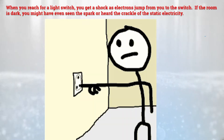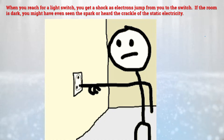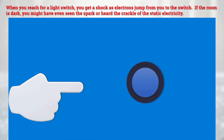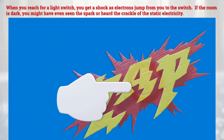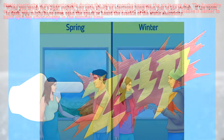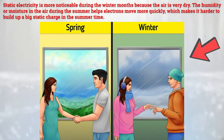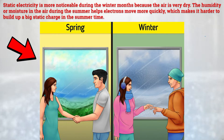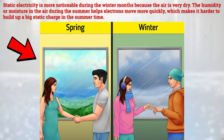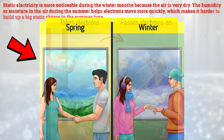When you reach for a light switch, you get a shock as electrons drop from you to the switch. If the room is dark, you might have even seen the spark or heard the crackle of the static electricity. Static electricity is more noticeable during the winter months because the air is very dry. The humidity or moisture in the air during the summer helps electrons move more quickly, which makes it harder to build up a static electric charge in the summertime.